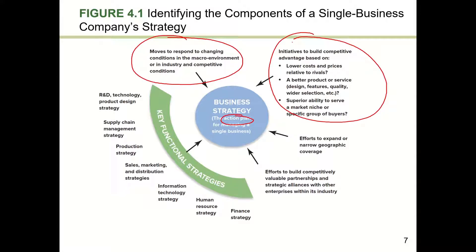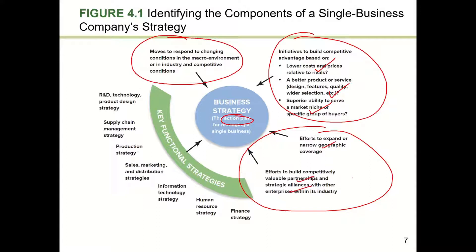Strategy also consists of initiatives to build competitive advantage. We should formulate strategies to build either efficiency or effectiveness, and decide on the scope of competition — choosing between a broad strategy or a niche strategy. Strategy components also include deciding on geographical coverage and entering into partnerships or alliances, which will be covered in chapter six. At a functional level, there are many layers of strategy within a company: corporate level, business level, functional level, and operational level strategy.